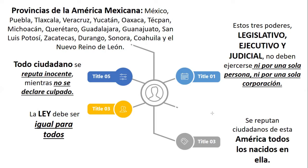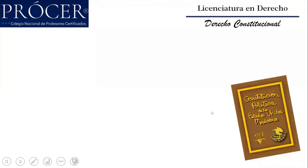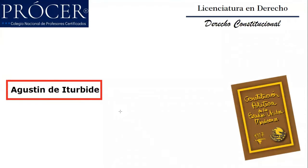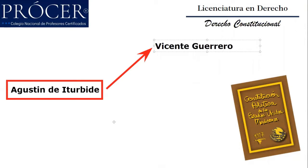En este momento surge otro personaje fundamental para nuestra historia: don Agustín de Iturbide. Iturbide había combatido a otros insurgentes con éxito y consideró que era el momento de consolidar la independencia. Cuando se encuentra con Vicente Guerrero, en lugar de combatirlo, hacen una alianza y la sellan a través del abrazo de Acatempan.